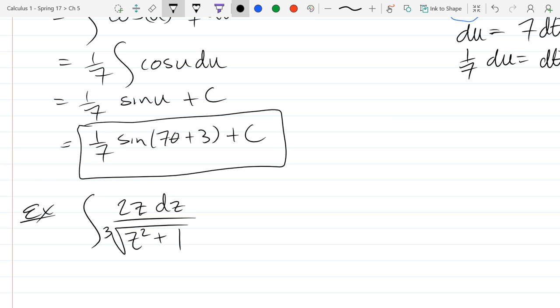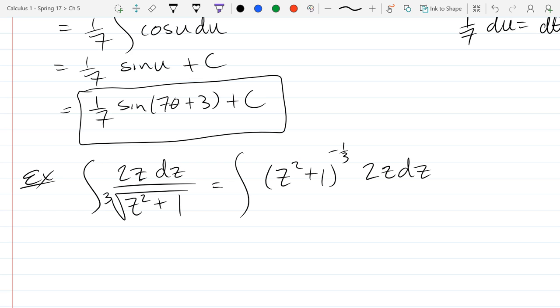So this one is 2z dz divided by the third root of z squared plus one. So our variable is z. We could rewrite this as the third root is the negative one-third power. So negative for the reciprocal, the third for the third root.